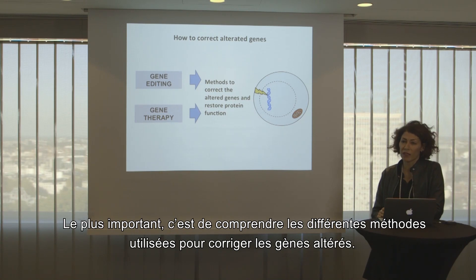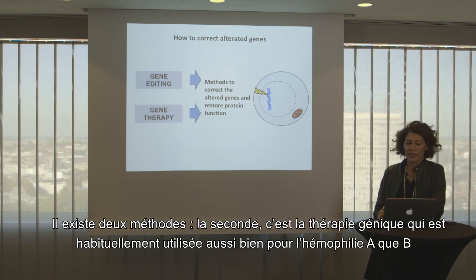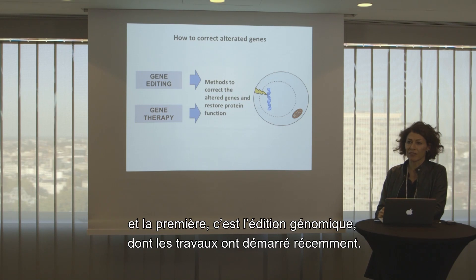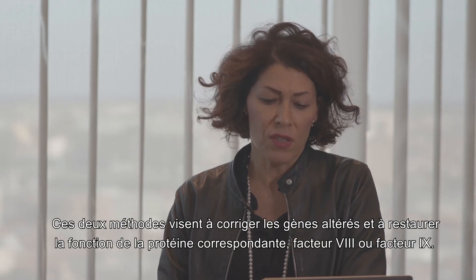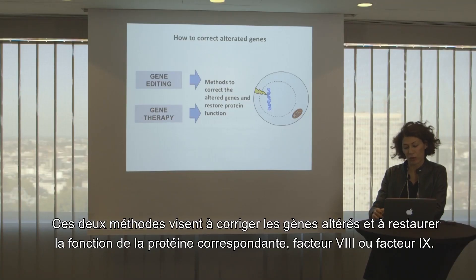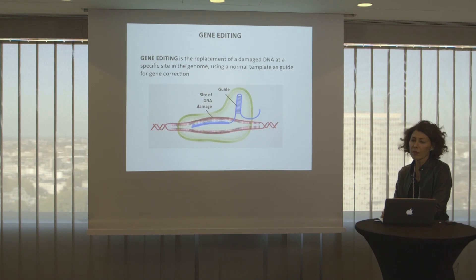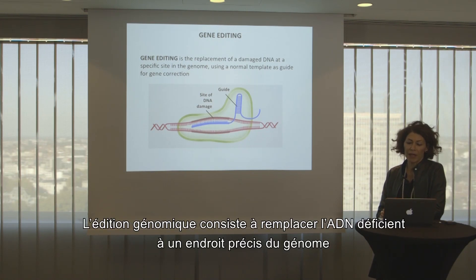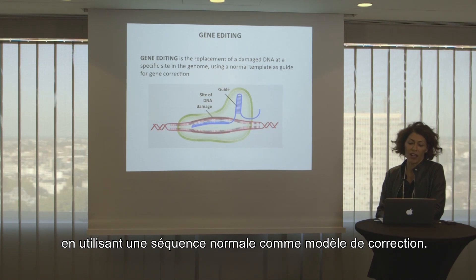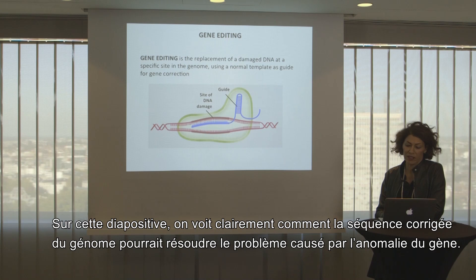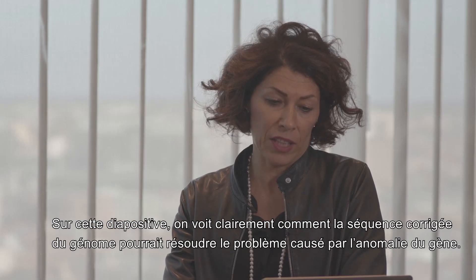The most important point is to understand the methods of correcting altered genes. There are two methods. Gene therapy is the one usually used for both Hemophilia A and B, and we also have the newer approach of gene editing. Gene editing is the replacement of damaged DNA at a specific site in the genome using a normal template as a guide for gene correction, as clearly shown in this slide.